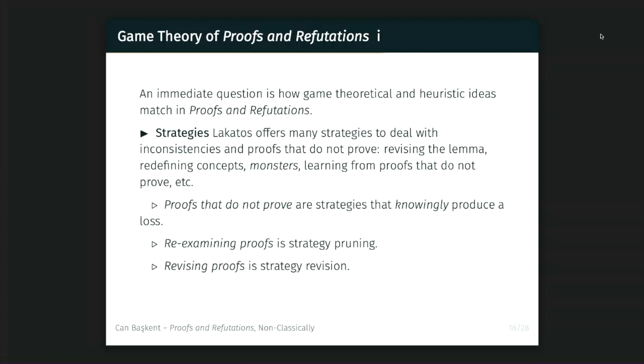The immediate question is: if I'm talking about a game-theoretic approach to proofs and refutations, I must at least vaguely identify how game-theoretic concepts match with the elements in proofs and refutations. What is a strategy? What is a move? The strategies in proofs and refutations are pretty clear — we are given a lot of strategies to deal with exceptions, monsters, and so forth. For example: revising a lemma, redefining concepts, redefining definitions, handling monsters, and learning from proofs that do not prove.